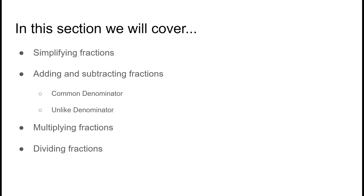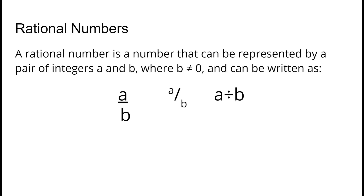These are the topics we'll be covering in this video. We're going to start by discussing rational numbers. A rational number is a number that can be represented by a pair of integers — positive and negative numbers — but the denominator can never be zero. We can write fractions in three different ways.